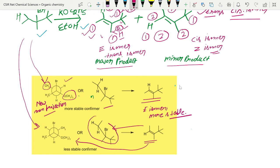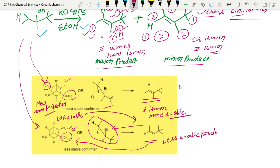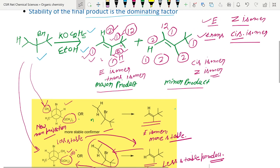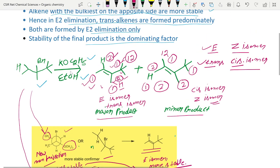We can also write this in another conformer. The Z isomer product will form from the less stable conformer. This conformer is at a 60-degree angle — it is less stable. In the more stable conformer the groups are in opposite directions, while the less stable conformer gives the less stable product. So when E2 elimination happens in the presence of base and ethanol, there will be two products: the E isomer, which is the most stable and major product, and the Z isomer, which is the less stable and minor product.